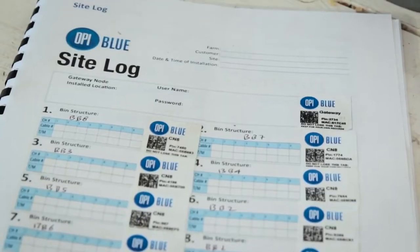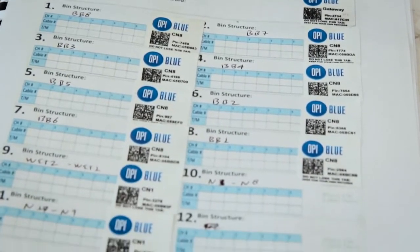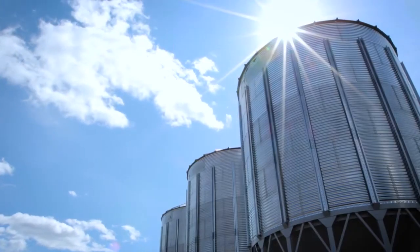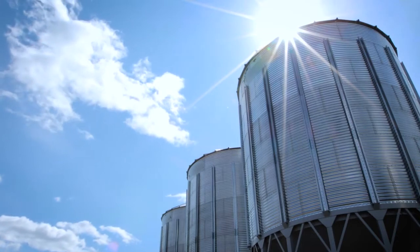You'll want to fill in this site log with details of each bin you're hooking up to the system, including the bin name and cables in the bins for reference when setting up your user account online later on.